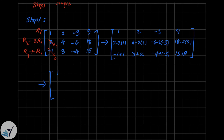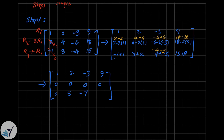Simplifying: the first row is 1, 2, -3, and 9. On the second row: 2 - 2 = 0; 4 - 4 = 0; -6 + 6 = 0; 18 - 18 = 0 — so the entire second row is all zeros. On the third row: -1 + 1 = 0; 3 + 2 = 5; -4 - 3 = -7; and 15 + 9 = 24. As you can see, the second row is all zeros.